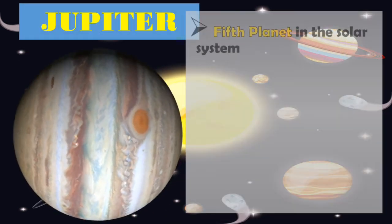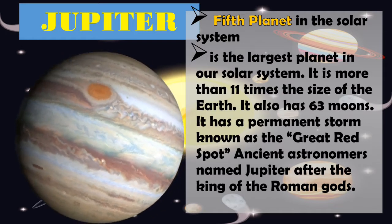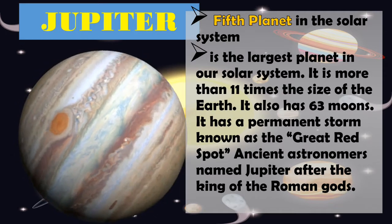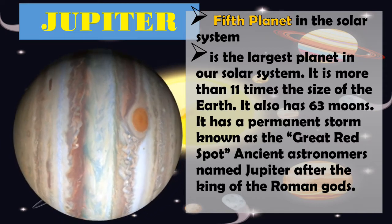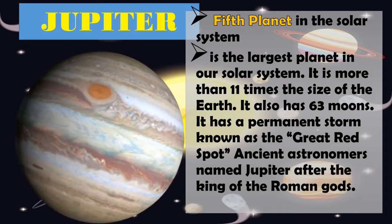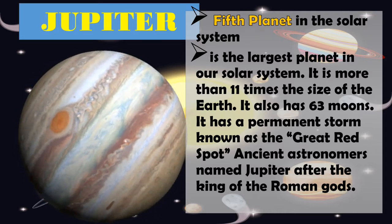Jupiter, fifth planet in the Solar System, is the largest planet in our Solar System. It is more than 11 times the size of the Earth. It also has 63 moons. It has a permanent storm known as the Great Red Spot. Ancient Astronomers named Jupiter after the King of the Roman Gods.